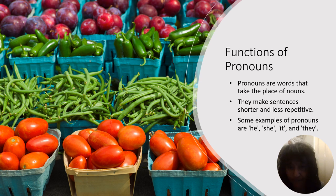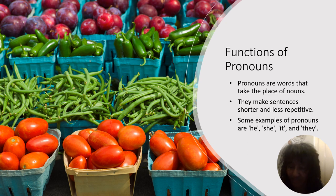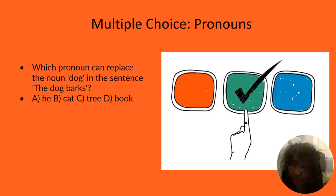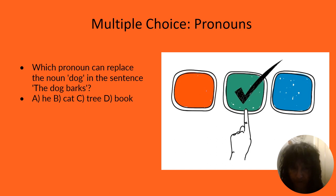Pronouns help us vary our sentences. For example: 'John and Sam went to the store. They both liked the green beans and the tomatoes. Sally was at the store too. She doesn't like plums.' You see the difference? Let's test what we just found out: which pronoun can replace the noun dog in the sentence 'the dog barks'?